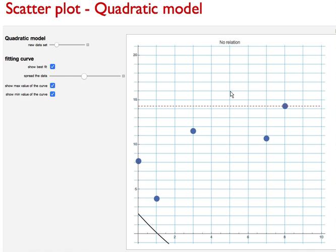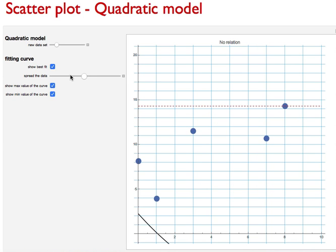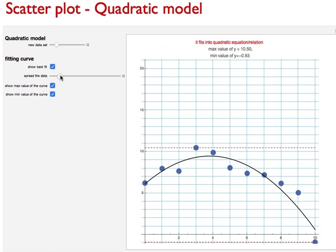Let me gather together this scatter plot. Now this is fitting into the quadratic model, and the maximum value is 10.5, the minimum value is -0.93.